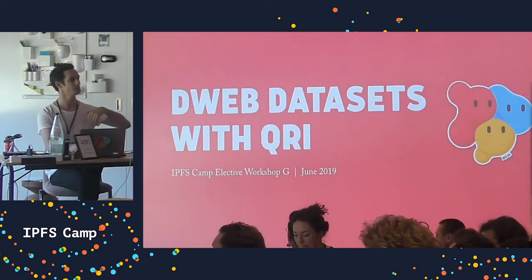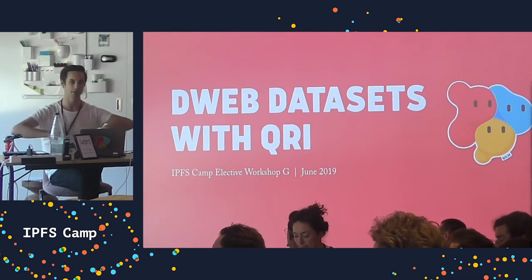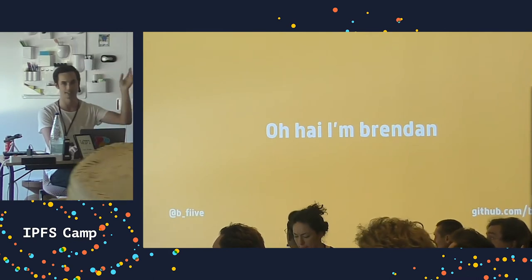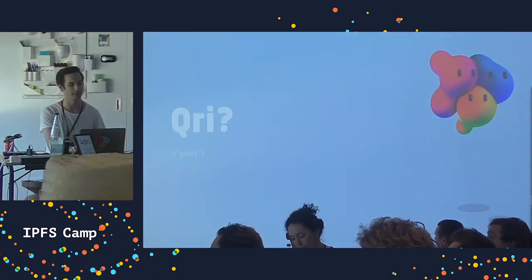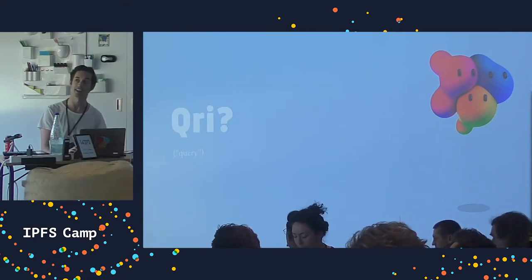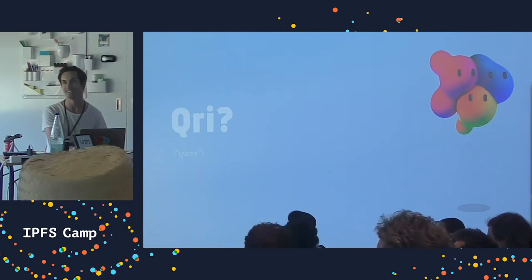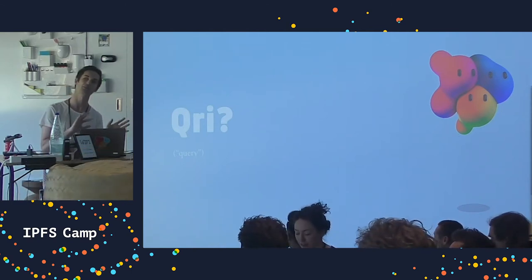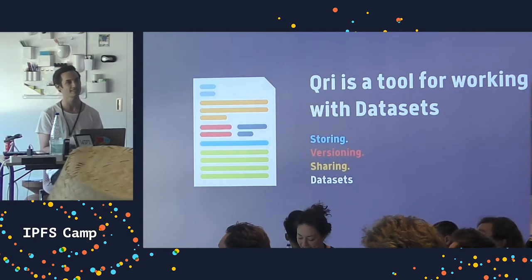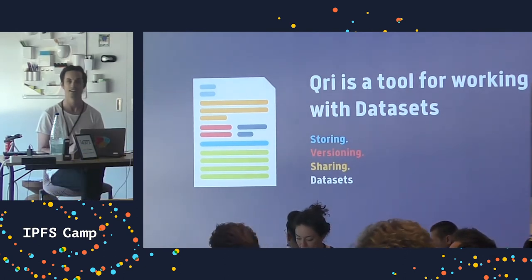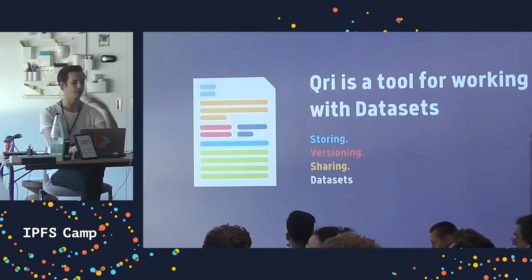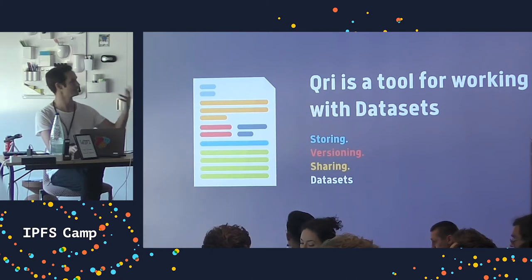We're going to quickly blast through an overview of what Qri is, taking detours into IPFS. I'm B5, Brendan on the internet - you'll see me on GitHub as b5. I work on Qri, spelled Q-R-I, pronounced 'query' - I will apologize for that. It seemed like a good idea at the time: sequel, query, questions - that was the vibe. Qri is about datasets: versioning datasets on IPFS.